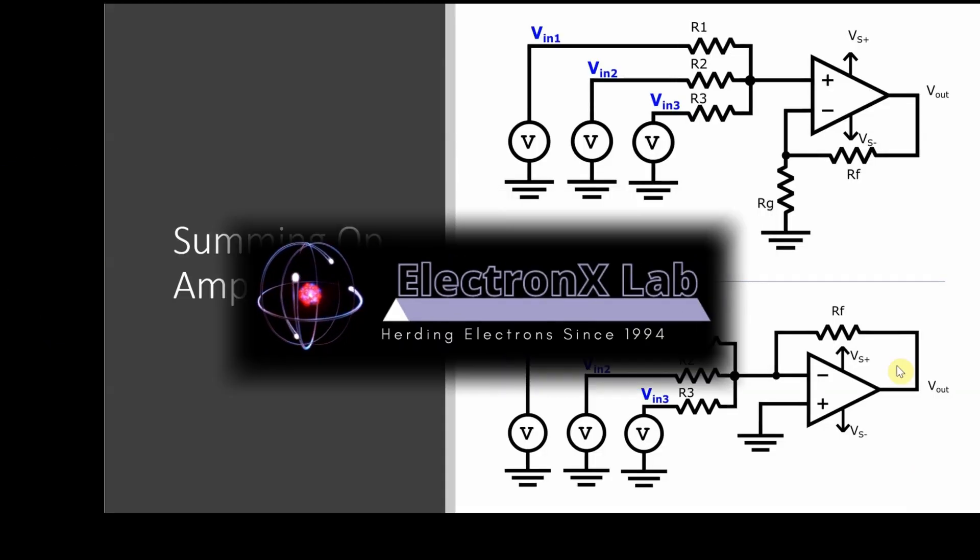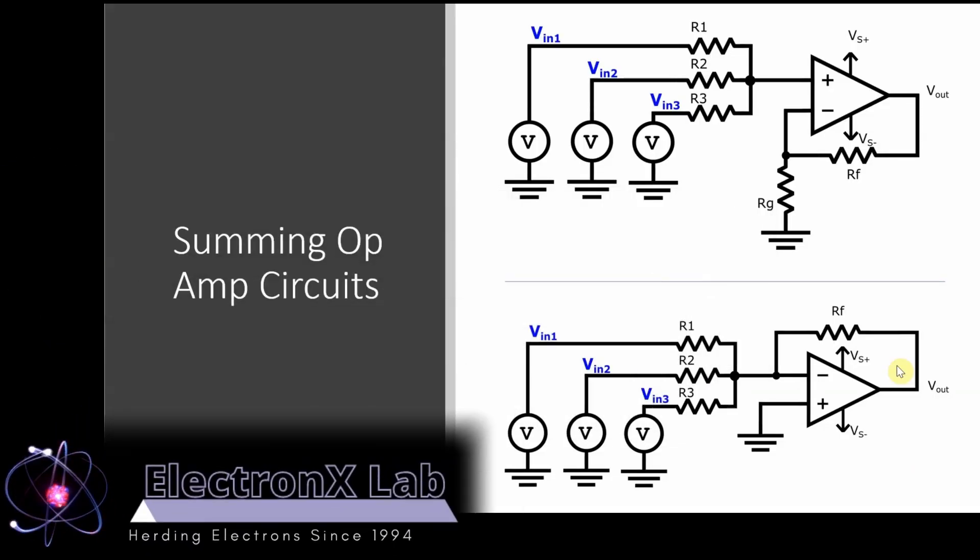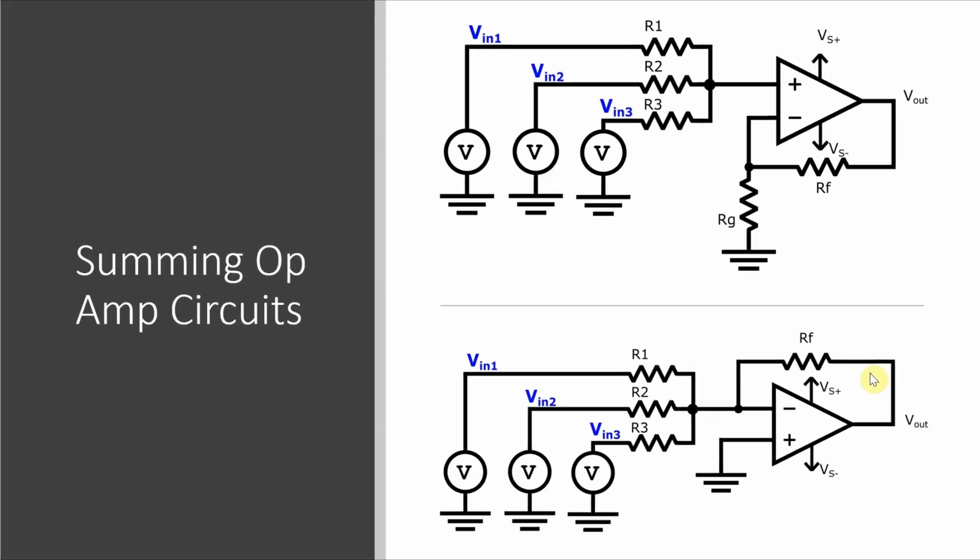Hello and welcome to the Electronics Lab. The two circuits that you see here are summing amplifiers, consisting of multiple inputs to an operational amplifier. The differences between these two are subtle, but you can see that the inputs are connected to the non-inverting input on one circuit and to the inverting input on the other circuit.